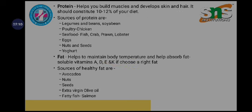Protein helps to build muscles, support growth and development, and also develops skin and hair. It should constitute 10 to 12 percent of the diet. Sources include legumes, beans, soya beans, seafood such as fish, crab, prawn, eggs, nuts, seeds, and yogurt, which contain a very high content of protein.